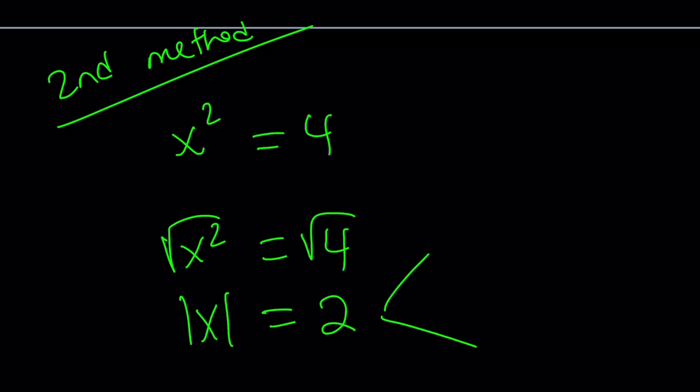So the second method for this problem is x squared equals 4. You just square root both sides. You get square root of x squared equals square root of 4. Square root of x squared is the absolute value of x, and this is 2. From here you get x equals 2 or x equals negative 2.